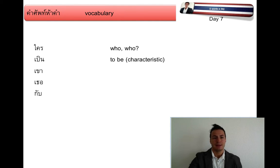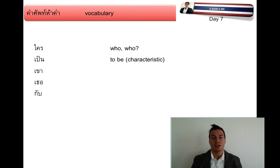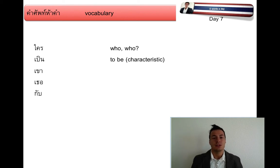เป็น translates as 'to be', and in brackets I have 'characteristics', because there are different translations of 'to be' in Thai. There is a locational 'to be' as we learned before — อยู่ — and then there is 'to be' as a characteristic of a person, which is เป็น, and then there is a third one we learn later on.